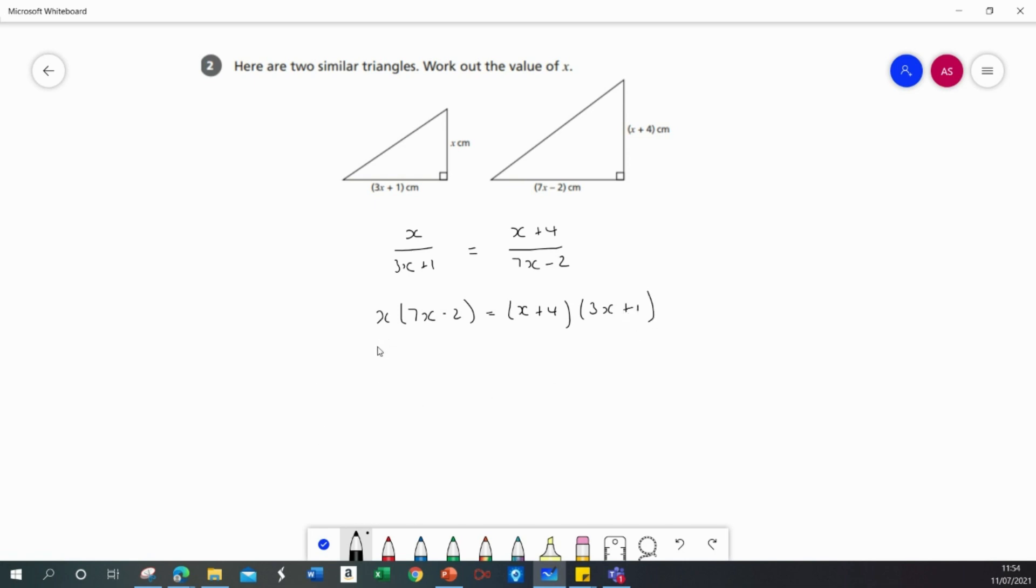And the next step is to multiply out the brackets. So 7x squared minus 2x equals 3x squared plus x plus 12x plus 4.